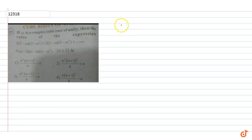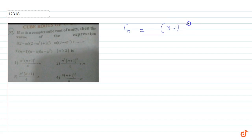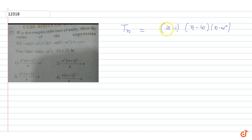If I can identify the general term Tₙ, then Tₙ = (n-1)(n-ω)(n-ω²). The first term corresponds to n=2 (since n-1=1), but putting n=1 adds zero so it won't impact. So I will start the summation from n=1 to n.